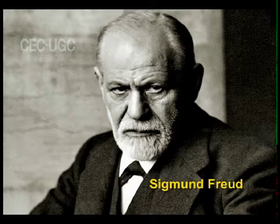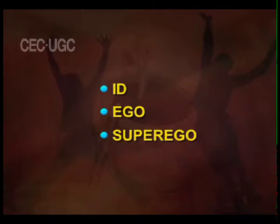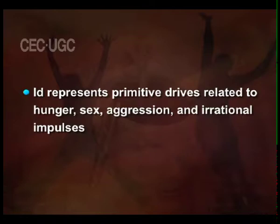According to Freud, everyone's personality has three aspects: the id, ego and superego. Id is the inborn part of personality that is present at birth. Id represents primitive drives related to hunger, sex, aggression and irrational impulses. Id operates according to the pleasure principle in which the goal is to maximize satisfaction and reduce tension.